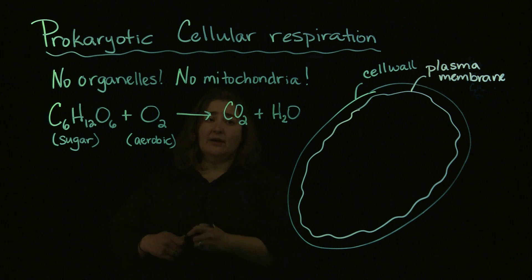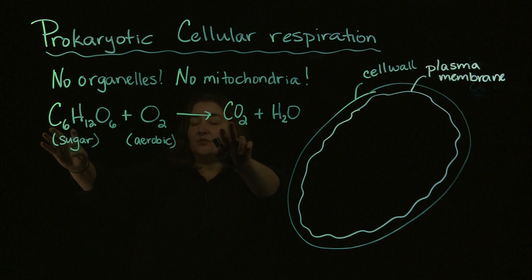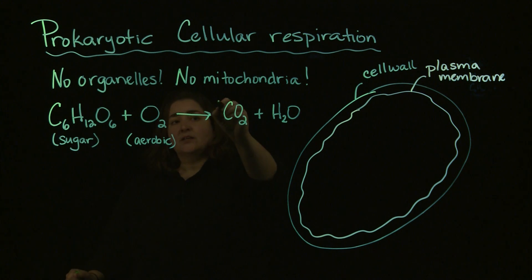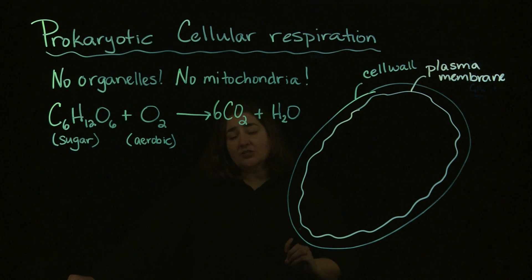So keep in mind, this chemical equation right here is not balanced, meaning we don't have the same number, for example, of carbons on this side as we do on that side. So to make this correct, we're going to add some numbers in front. That's why those numbers are there. Because in terms of chemical reactions, matter isn't created or destroyed. It's only transformed. So if you start out with six carbons, you have to end up with six carbons.